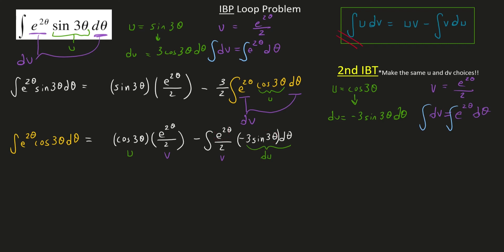First, let's just factor out our constants. This negative right here will cancel out this negative to make a positive 3 over 2 outside the integral.